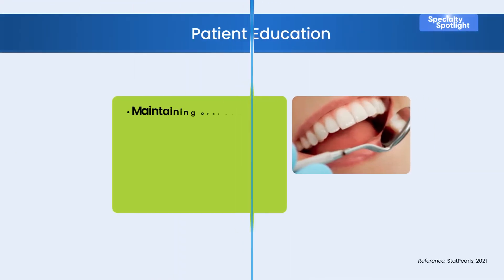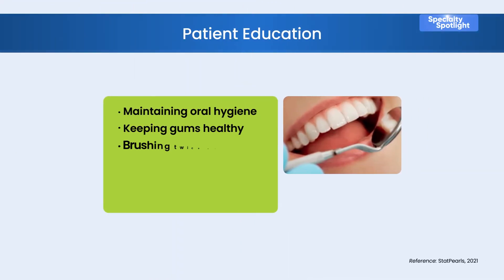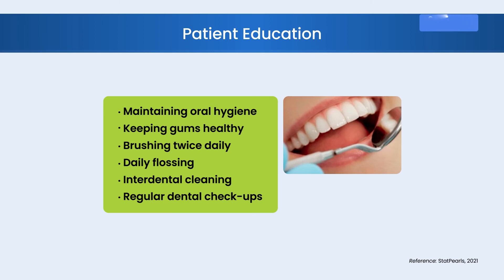A meta-analysis identified the implementation of preventive programs to be effective in managing ANUG. Maintaining good oral hygiene is the most effective way to avoid developing gum diseases like gingivitis. In addition, regular dental visits help to achieve healthy gums and prevent oral diseases.